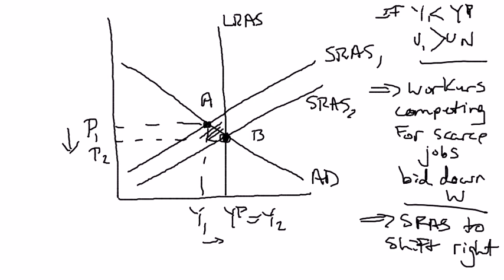The exact same story works in reverse — you should work through that to make sure you understand it. If output were above potential, the unemployment rate would be below the natural rate. Workers are scarce, so firms have to bid up nominal wages to attract them — bigger signing bonuses, bigger pay increases, better health care or fringe benefits, longer vacation times. That drives up costs of production for firms, so the short-run aggregate-supply curve shifts to the left. Those are the two cases: a decrease in costs shifts the SRAS right; an increase in costs shifts it left.